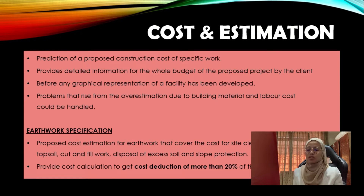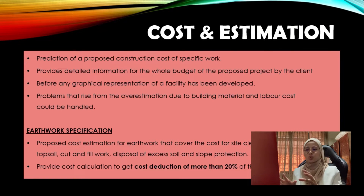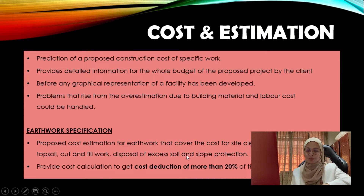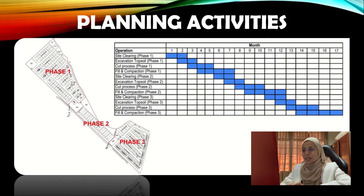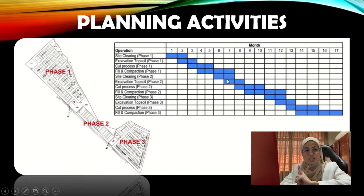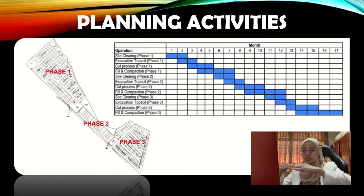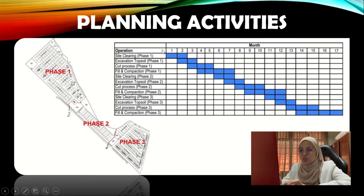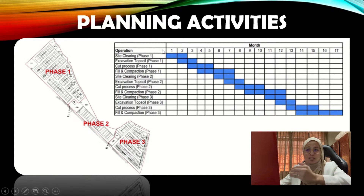The proposed cost estimation for earthwork covers site clearing, excavation of topsoil, cut and fill work, disposal of excess soil, and slope protection. Their goal is to achieve a cost reduction of more than 20% if possible from the original planning. The proposal is divided into three sections, and a planning activities table schedules each operation by phase — phase 1, phase 2, and phase 3 — managing each activity by month so the project can be completed within the client's requested period.